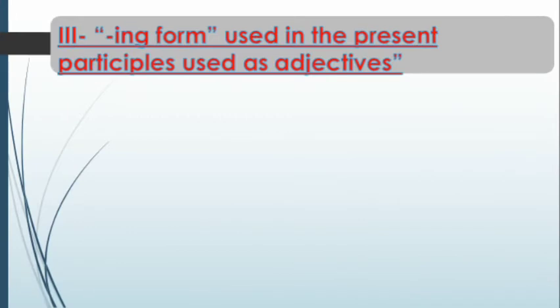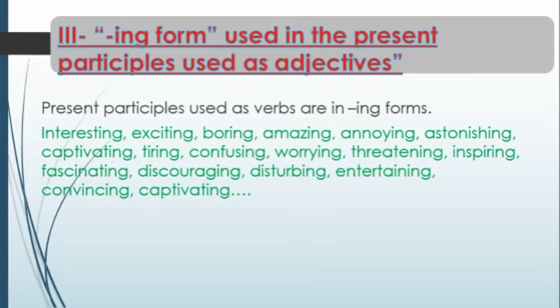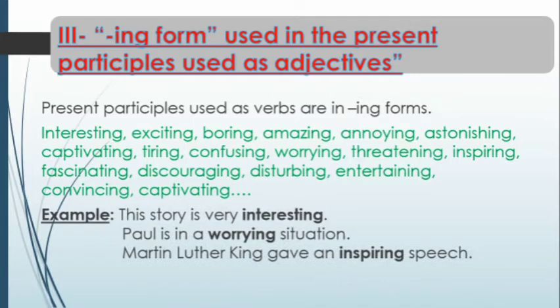The ING form is also used in the present participle used as adjectives. We have examples of adjectives such as interesting, exciting, boring, amazing, annoying, and so on. In English, most present participles used as adjectives are formed with the ING form — though note that it is not all adjectives, but most of them share this structure. For example: 'This story is very interesting,' 'Paul is in a worrying situation,' 'Martin Luther King gave an inspiring speech.' All these adjectives are present participles ending in the ING form.